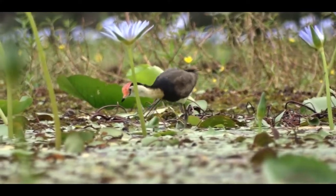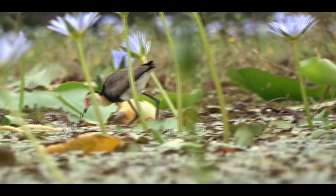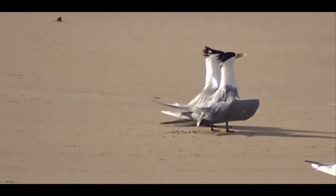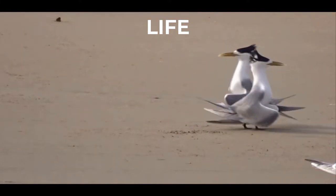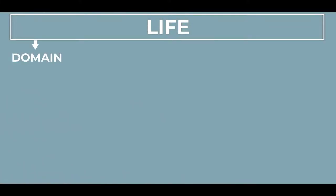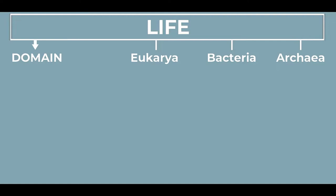But where does the class Aves fit into the whole taxonomic structure? Well, let's start as far back as we can go. Birds are a form of life, and all life is categorised into three taxonomic ranks, or three domains: Archaea, Bacteria, and Eukarya. All animals are eukaryotic, which means that their cells have a nucleus enclosed within a nuclear envelope. So for the purposes of this video, we are only interested in the domain Eukarya.